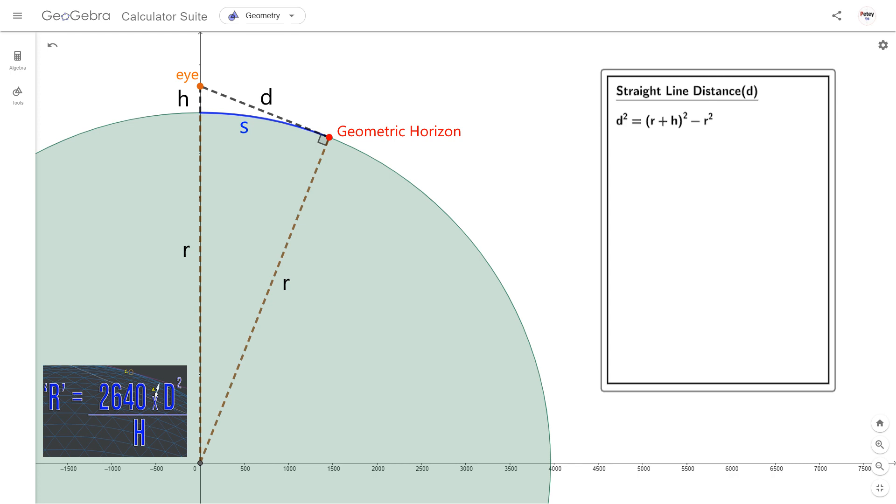Picture this circle as a globe sliced in half. We have an observer above the surface at some height h, that's in miles. The straight line from the observer to the horizon has some distance d, also in miles. And using Pythagoras we can work out the exact length of d, like so.